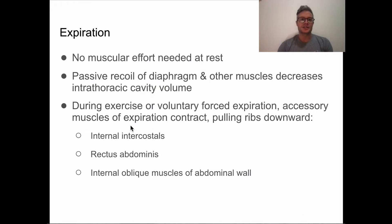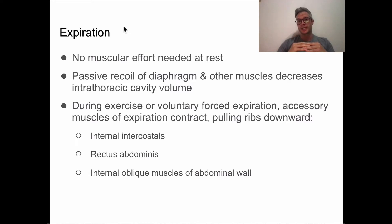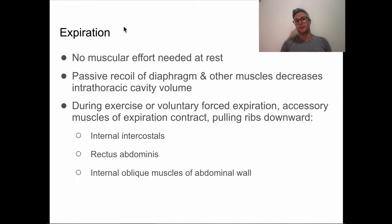How does expiration occur? We relax. If we're not undergoing forced exhalation, our muscles essentially just relax. The diaphragm returns to its dome shape in a relaxed state, which means less volume in our lungs. It contracts to inspire, relaxes to breathe out, and the intrathoracic volume decreases.